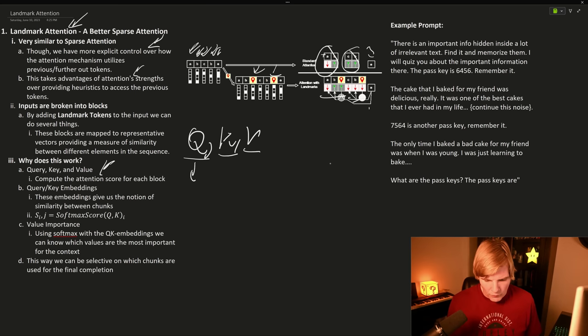So if we took a movie recommendation system, for example, your query could be the type of movie you're searching for. The keys would be metadata about movies, and then the values would be the possible completions. So if you were to ask for a horror movie, you would look for keys that included horror movie, and then you would eventually get a horror movie back.